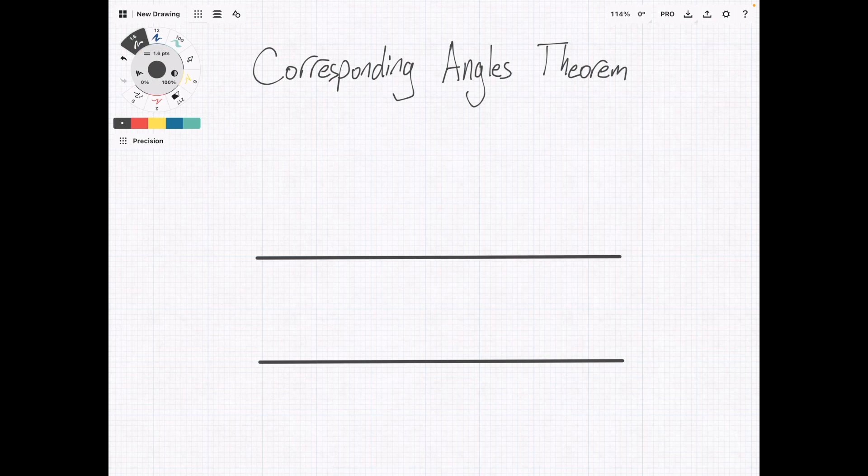Instead, what I want to do is show you what the theorems tell you about a set of parallel lines. So, we're going to start by denoting that these are parallel.